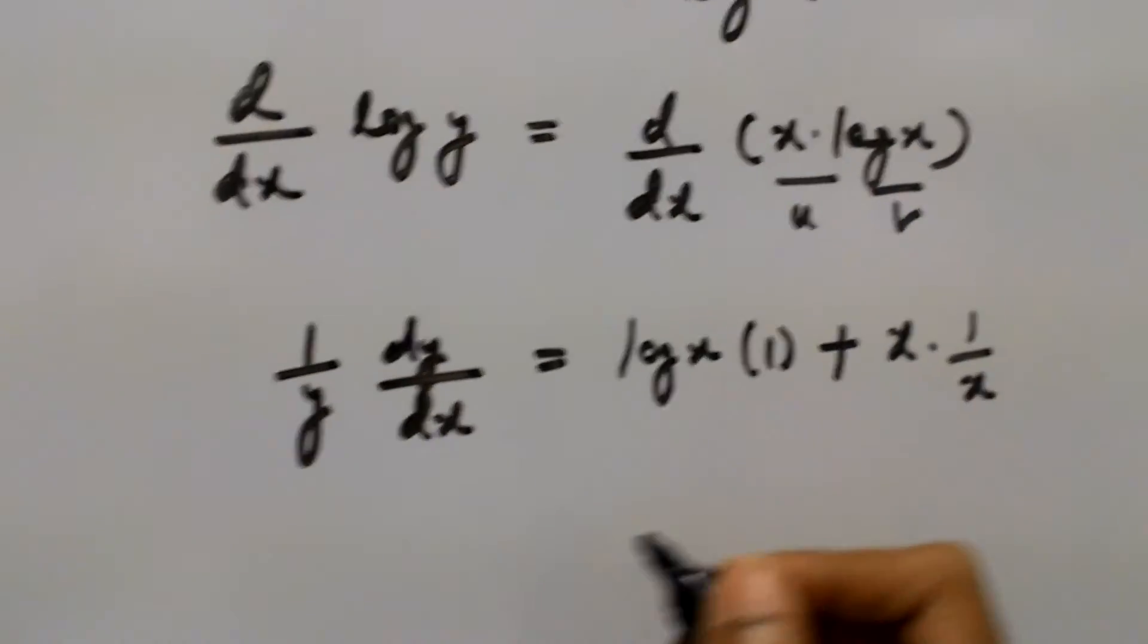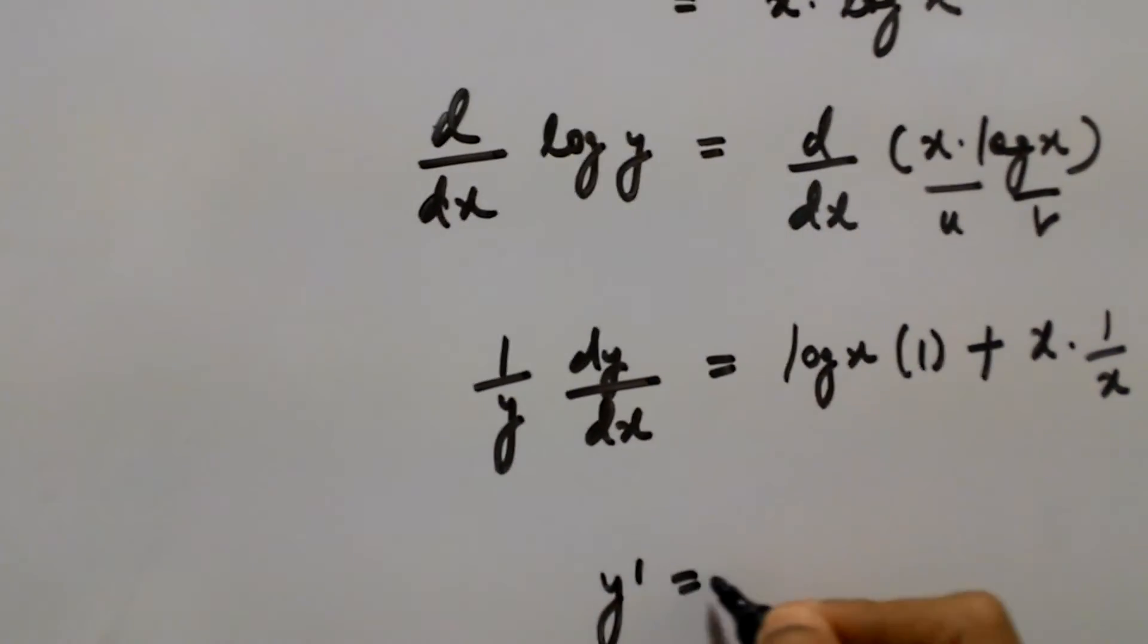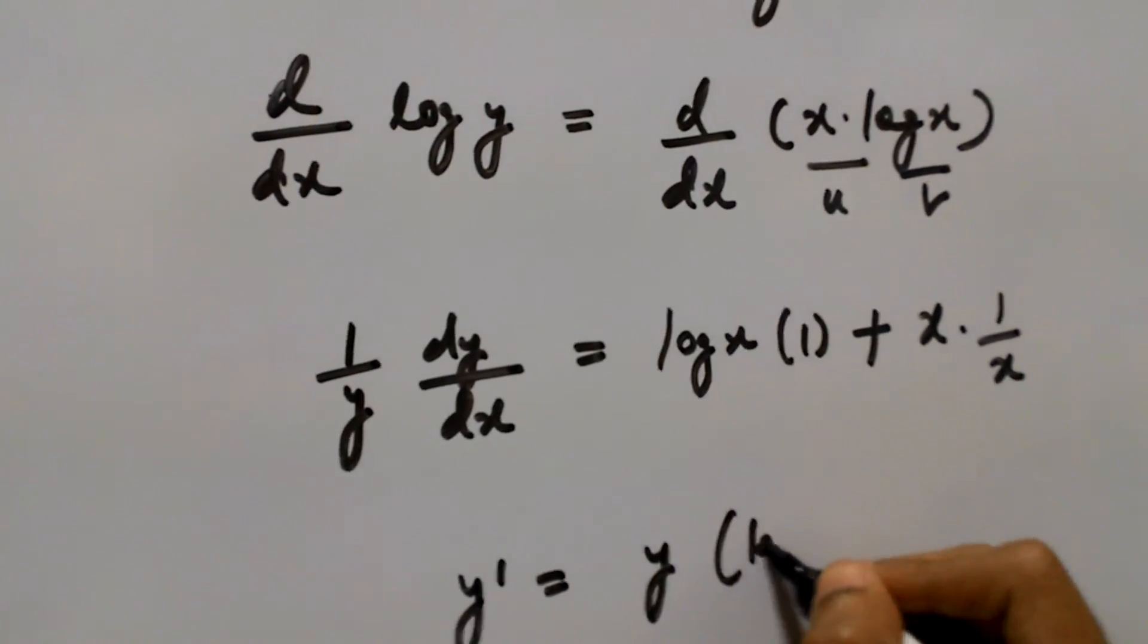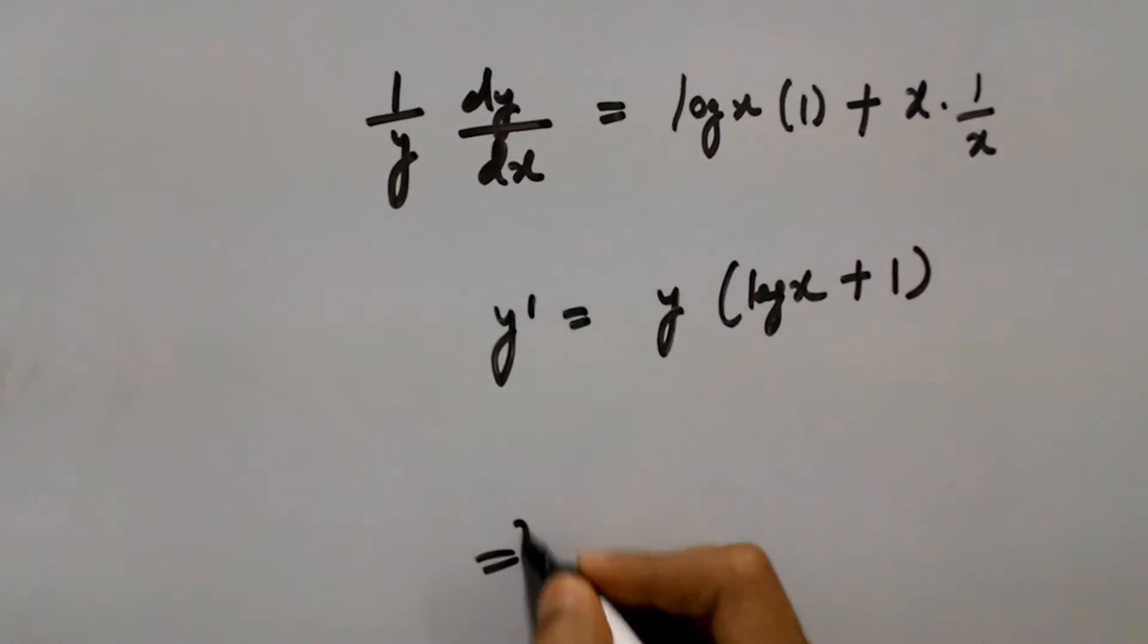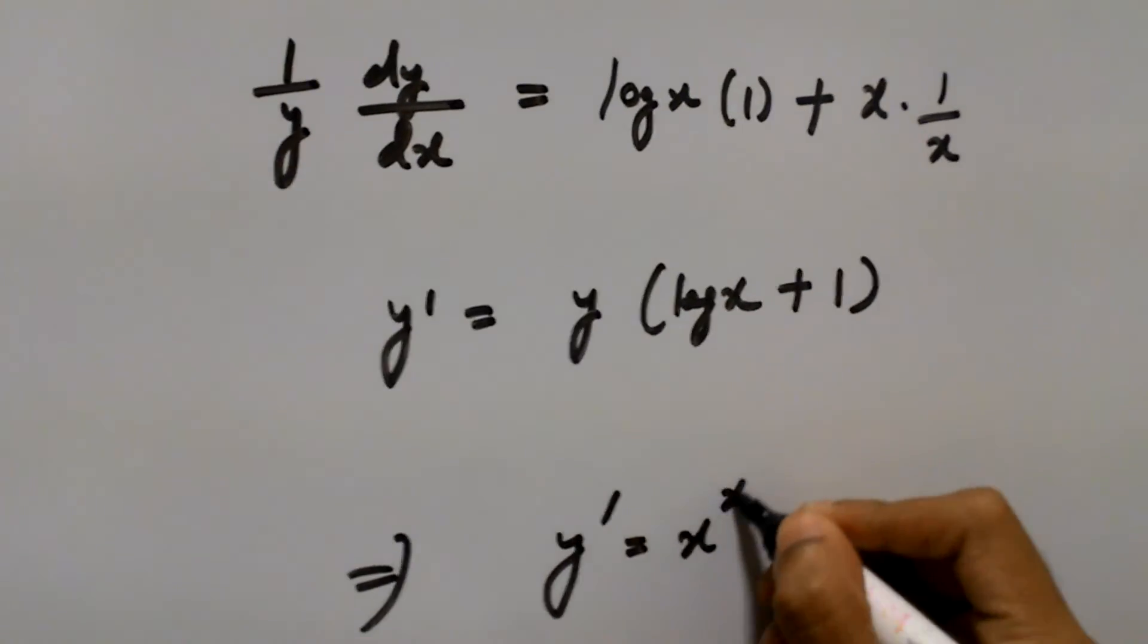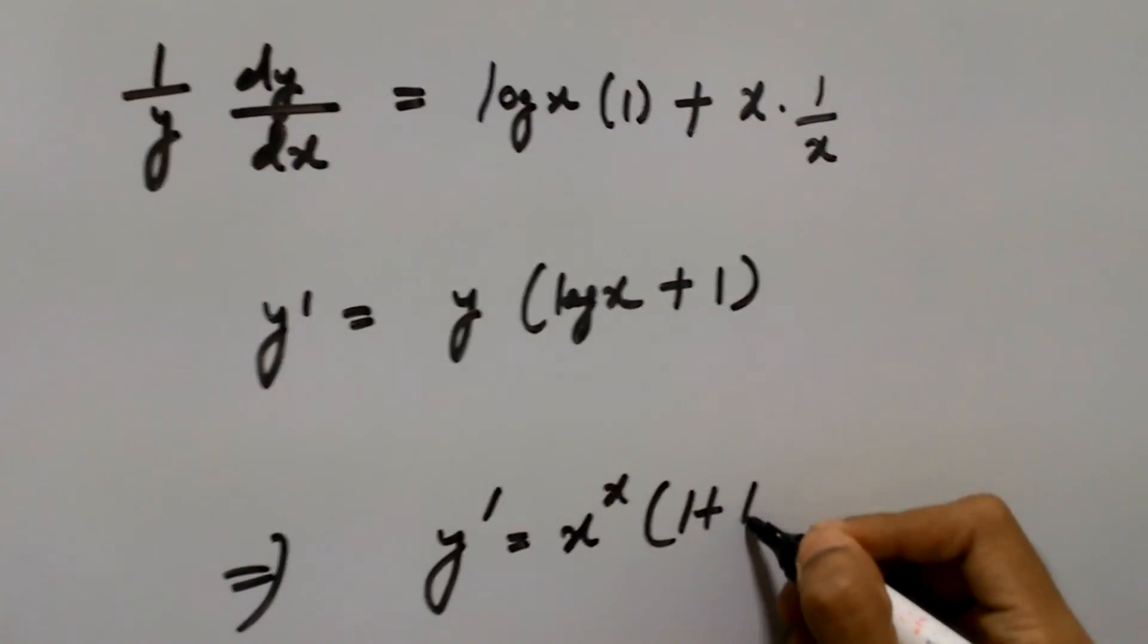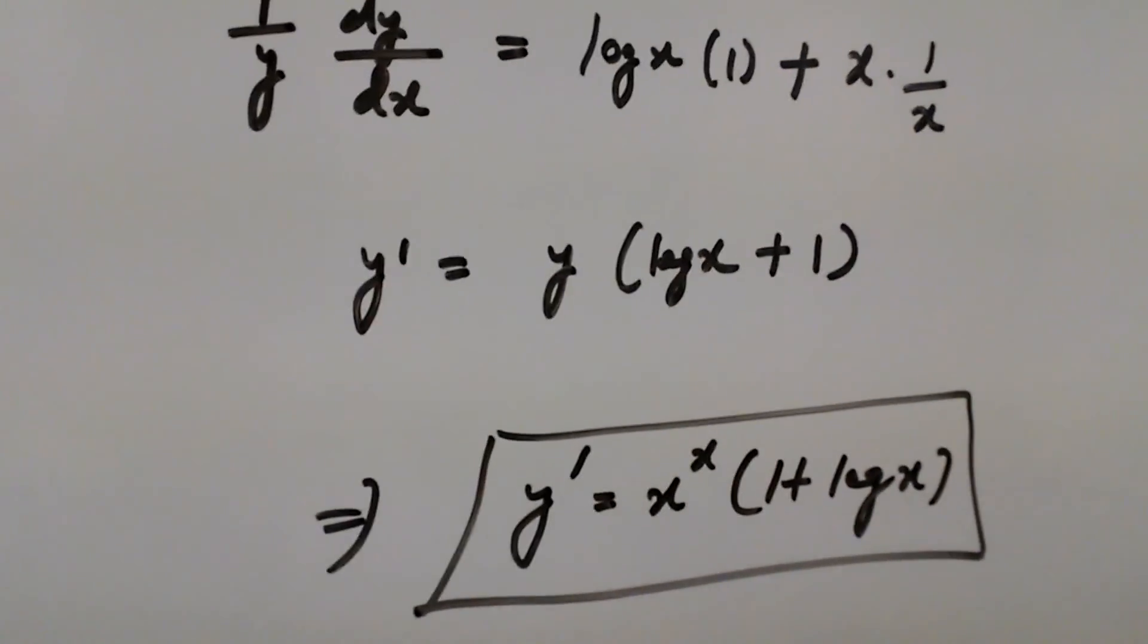So this gives us dy by dx, y dash, equals y log of x plus one. This implies y dash is equal to y, we have x raised to the power x into bracket one plus log x. So this is the final differentiation of x raised to the power x.